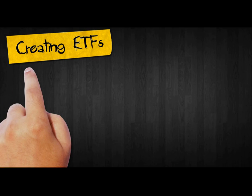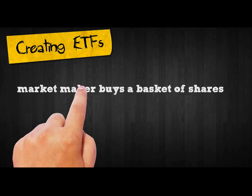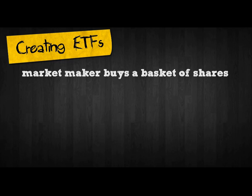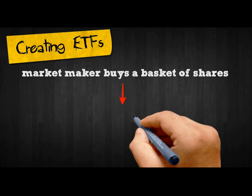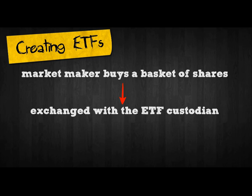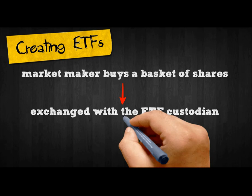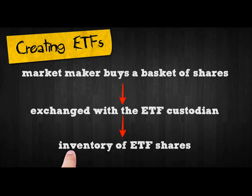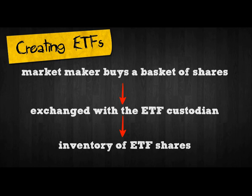There are three distinct stages to creating ETFs. First, the market maker buys a basket of shares as specified by the ETF custodian for cash. This basket of securities is then exchanged with the ETF custodian for a set number of ETF units or shares. Finally, the market maker then has an inventory of ETF shares, through which it can meet the demand from the market for orders to buy or sell.